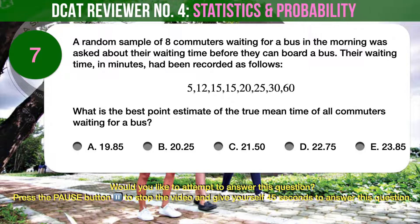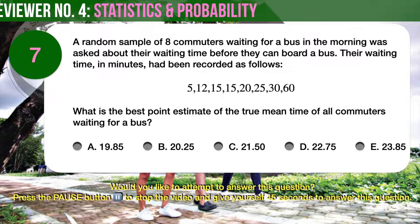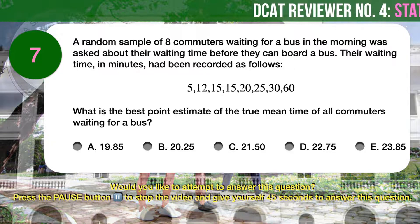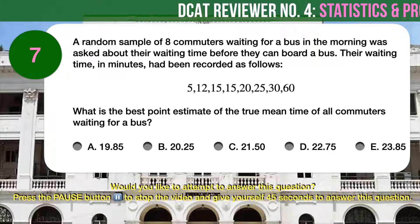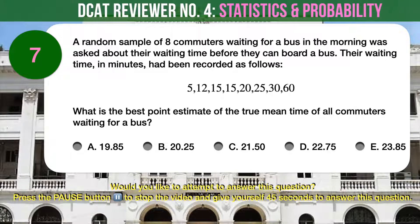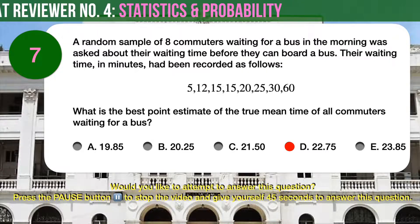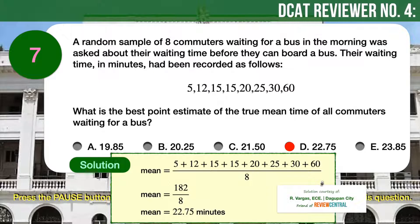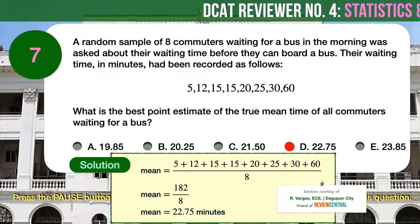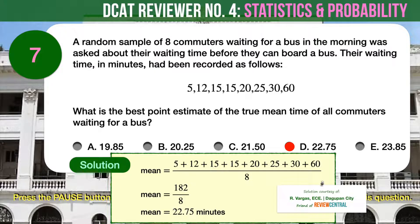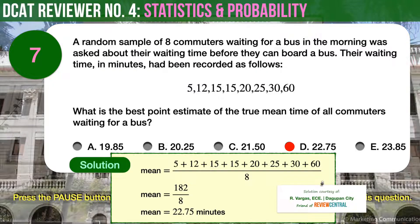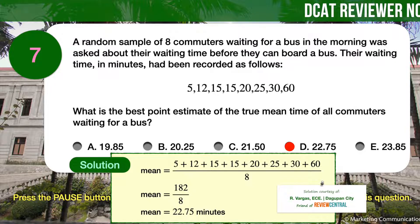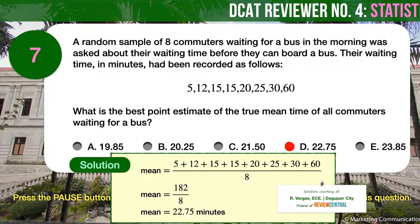What is the best point estimate of the true mean time of all commuters waiting for a bus? A, 19.85. B, 20.25. C, 21.50. D, 22.75. E, 23.85. The correct answer is D, 22.75 minutes. One of the fundamental principles of statistics is that the larger the sample size, the more accurate the average values will be. Larger sample sizes also help researchers identify outliers and provide smaller margins of error. The best point estimate of the true mean time is the mean of all the available sample data — we need to find the mean waiting time of all eight commuters. Computing for the mean time, we arrive at 22.75 minutes.